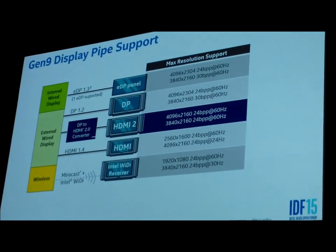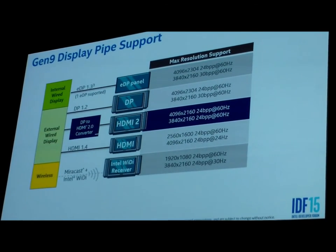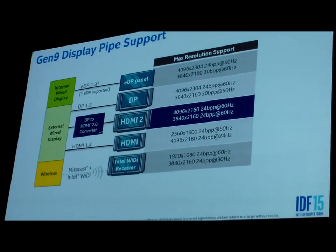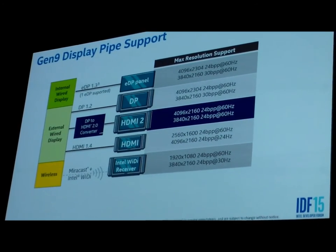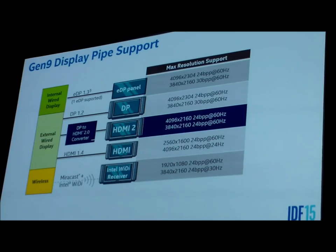For the display standards scorecard: we support wired internal display with embedded DisplayPort, external wired displays with DisplayPort 1.2 or HDMI 1.4, or with a dongle or upconverter you can go to HDMI 2.0. We also support wireless Miracast with the Intel WiDi improvements. On the right-hand side are the maximum resolutions the architecture supports — what's available in each SKU will depend on those definitions.